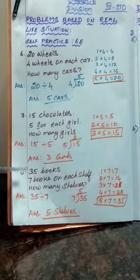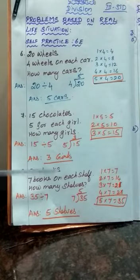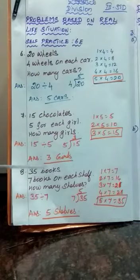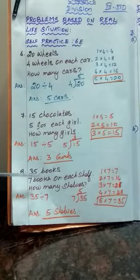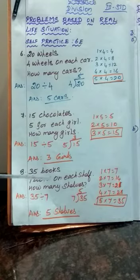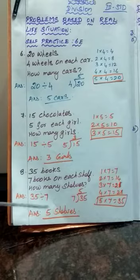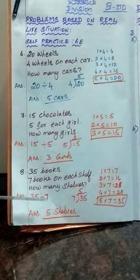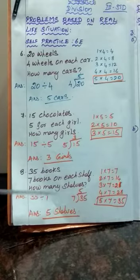Let's see the next one — 8th sum. 35 books, 7 books on each shelf. How many shelves? What do you understand? 35 books are there. Out of 35, 7 books are arranged in each shelf. In 1 shelf 7 books are arranged. So in how many shelves are the total 35 books arranged? That is the question. Total number of books is 35. Number of books in 1 shelf is 7. So 35 divided by 7.